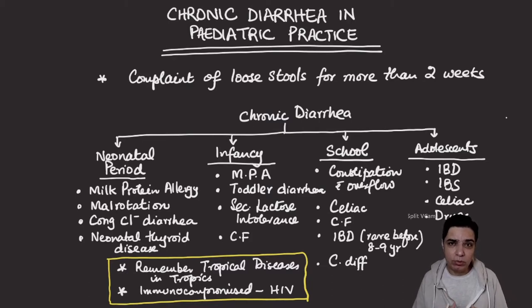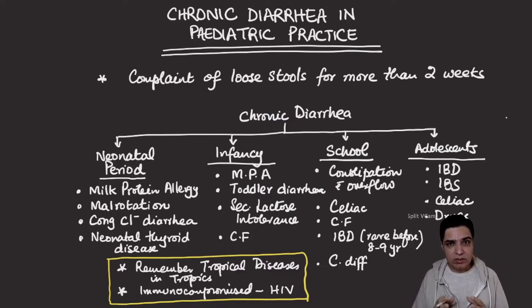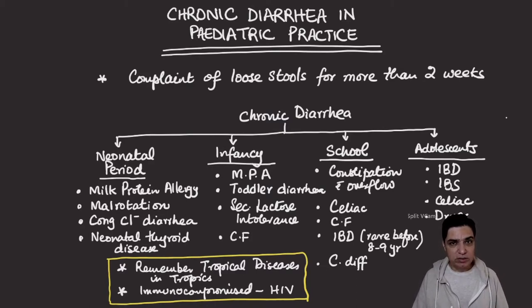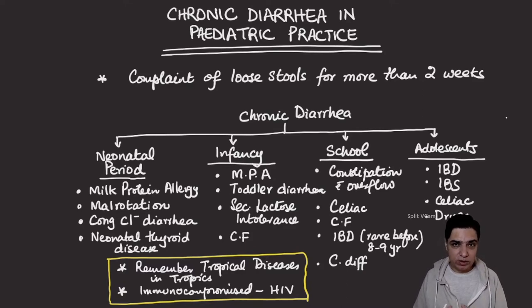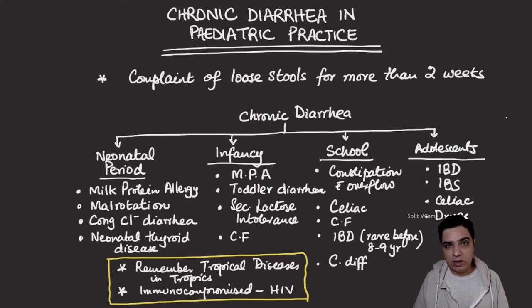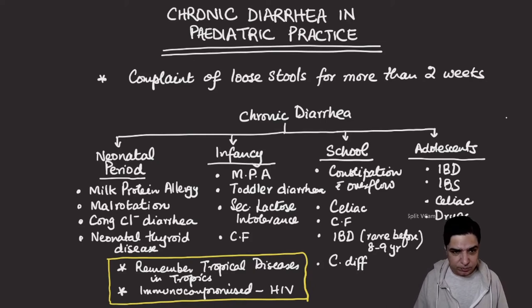Before we talk about how to approach a case of chronic diarrhea, you should know the causes. It's easy if we split the causes into four groups: causes in the neonatal period, causes in infancy, causes in the school age group including preschoolers and schoolers, and causes in adolescents — those kids who are roughly 12 to 18 years of age.